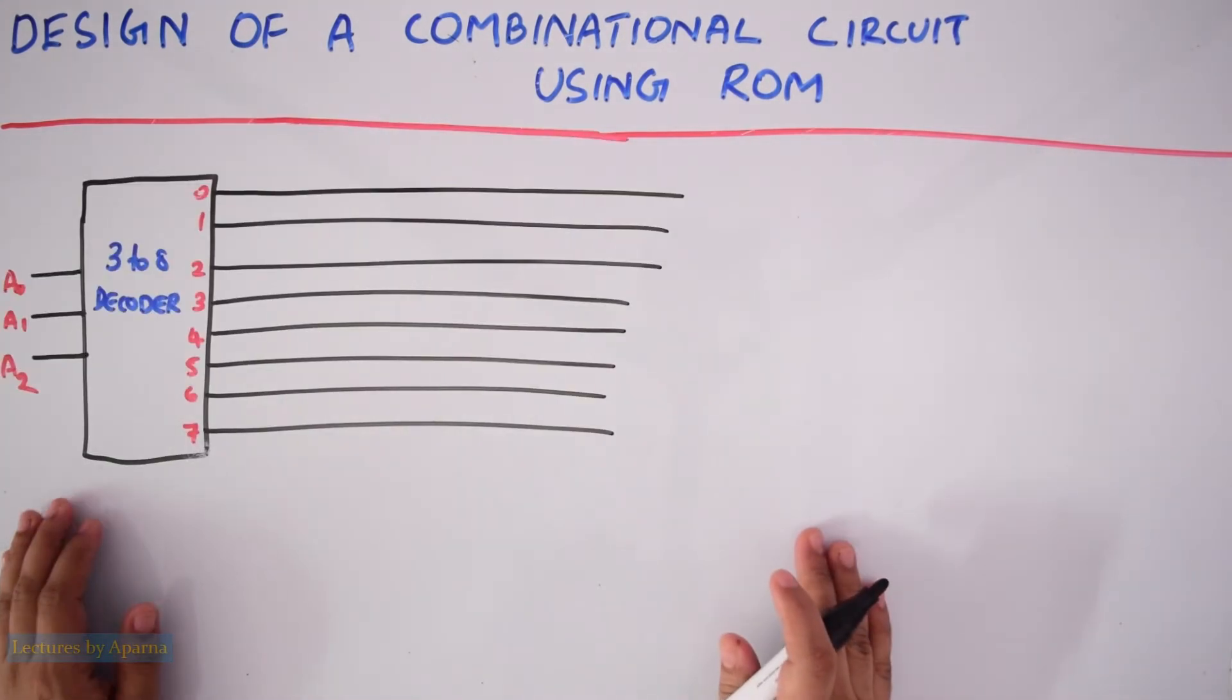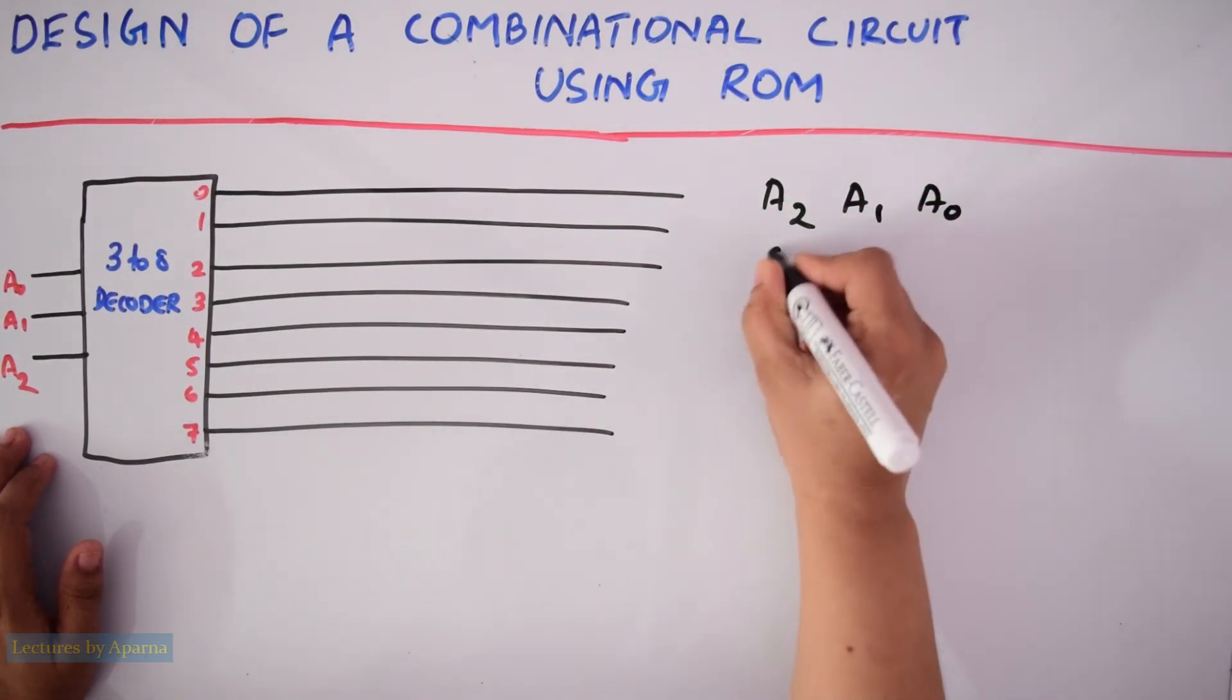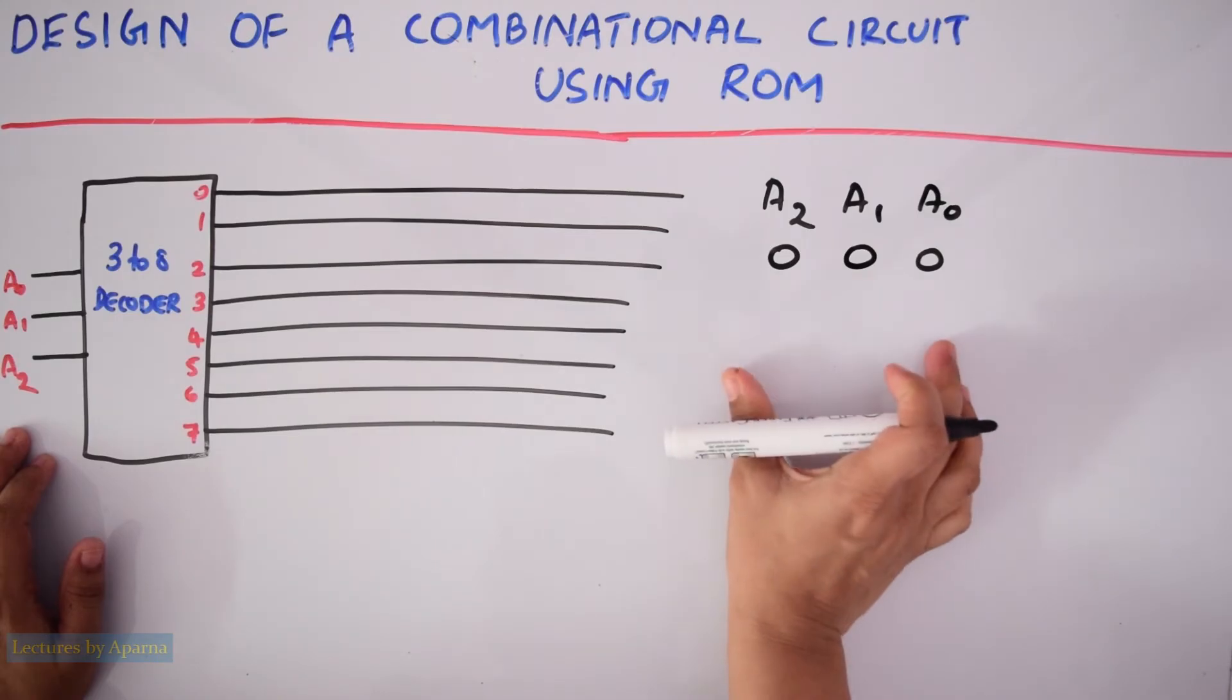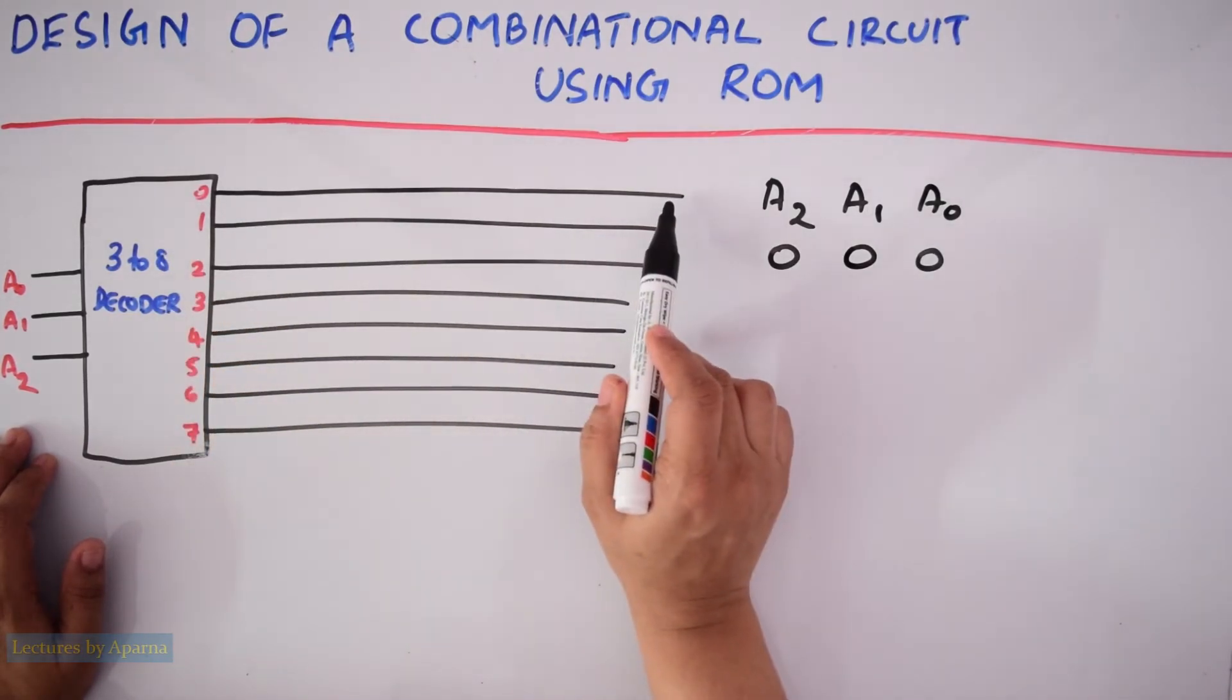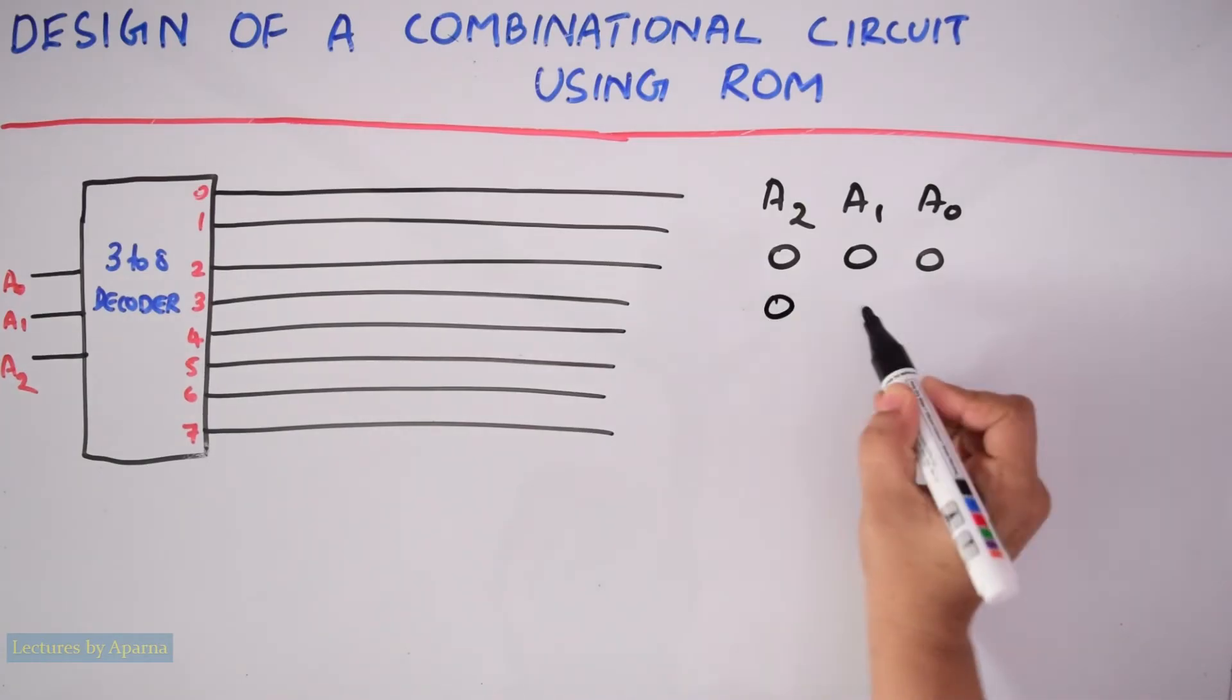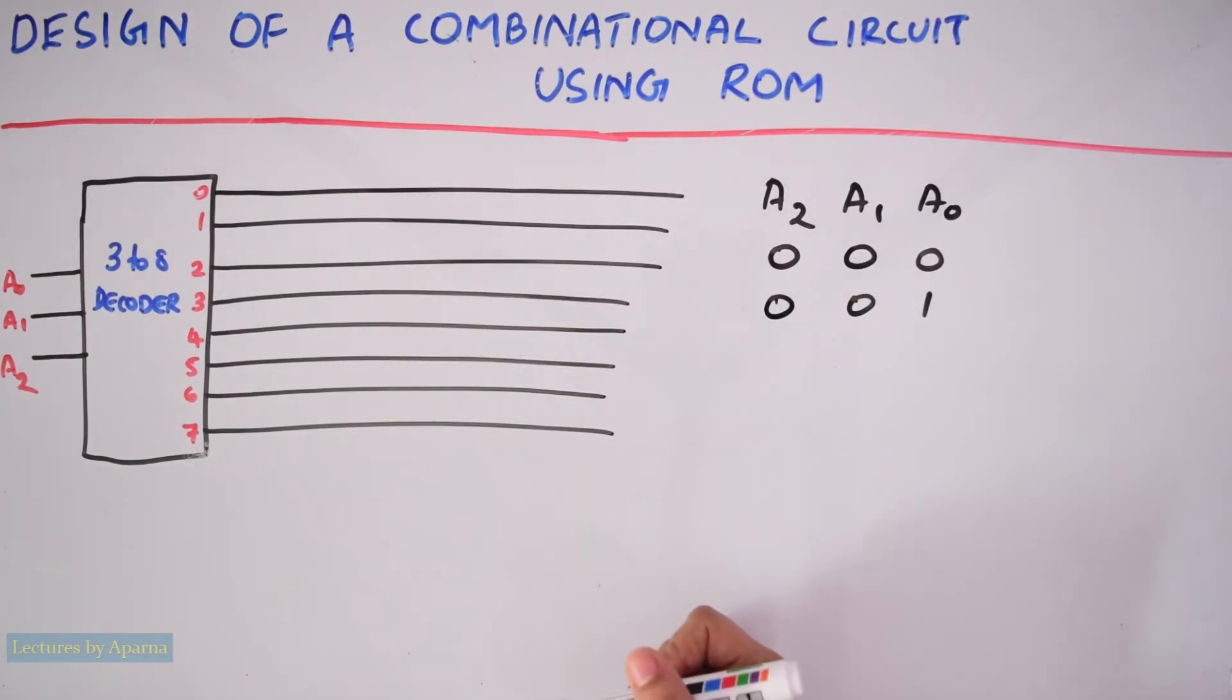So if you draw it, it will be like this. When the input combination A2, A1, A0 equal to 000 comes, then line 0 of the decoder will be activated. When the input combination 001 comes, line 1 of the decoder will be activated, and all other lines will be deactivated.